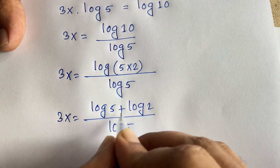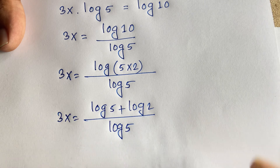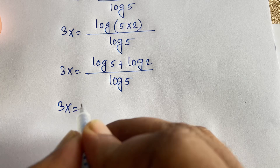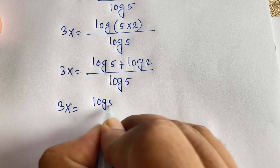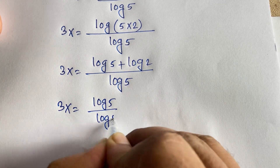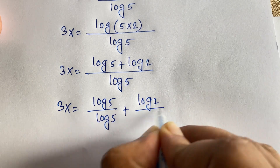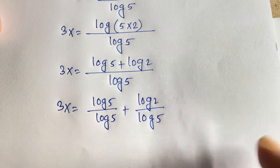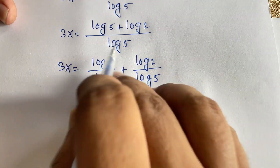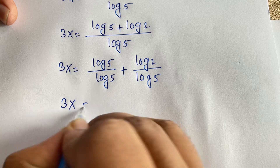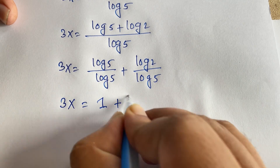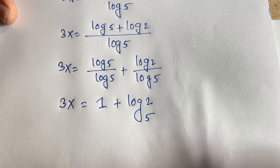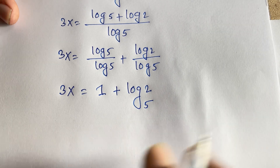You know that log(ab) equals log a plus log b, according to the log product rule. So 3x equals log 5 over log 5, plus log 2 over log 5. The log 5 terms cancel, and we find 3x is equal to 1 plus log base 5 of 2.